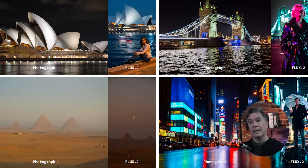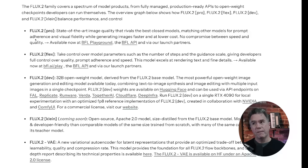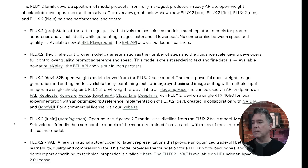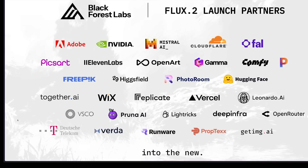Additionally, Flux 2 has significantly more real-world knowledge in lighting and spatial logic. Flux 2 is coming in with a few different flavors: Flux 2 Pro, the Flex version, the dev version, and Klein — coming soon as the open-source version. There's also a VAE, which is actually available now over on Hugging Face. As for where it's available, a whole bunch of places at launch, and being Flux, it will pretty much be everywhere by the end of the week.